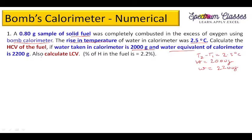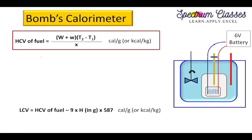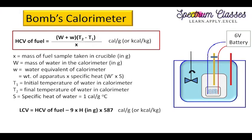The formula for gross calorific value using the bomb calorimeter is: GCV = (W + w) × (T2 − T1) × S divided by x. Here, W is the mass of water in the calorimeter, small w is the water equivalent of the calorimeter, T2 minus T1 is the rise in temperature, x is the sample of fuel taken, and S is the specific heat.